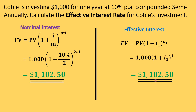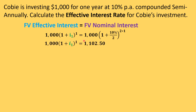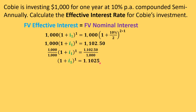We don't have i₁ — we need to solve for it. These two equations are practically equal, so we can set them equal to each other and solve for i₁. We plug in the variables: one thousand dollars present value, one year time period, ten percent nominal rate compounded semi-annually, and two times one for compounding frequency multiplied by time period. Dividing each side by one thousand gives us 1.025.